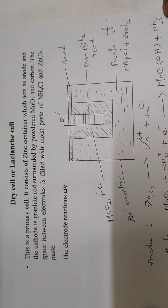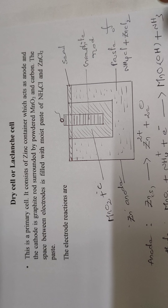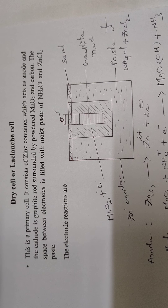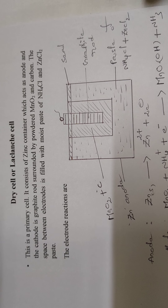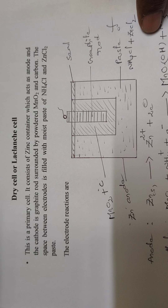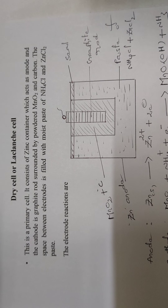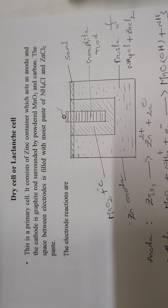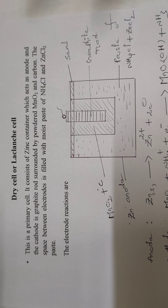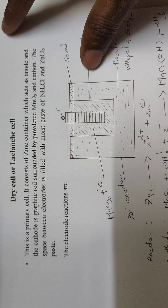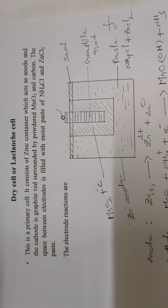Hi students, welcome to Karthik Chemistry channel. In the previous class I explained batteries. Batteries are mainly classified as two types: primary batteries and secondary batteries, or primary cells and secondary cells. Examples for primary batteries are dry cells — like the Leclanche cell and mercury cell.